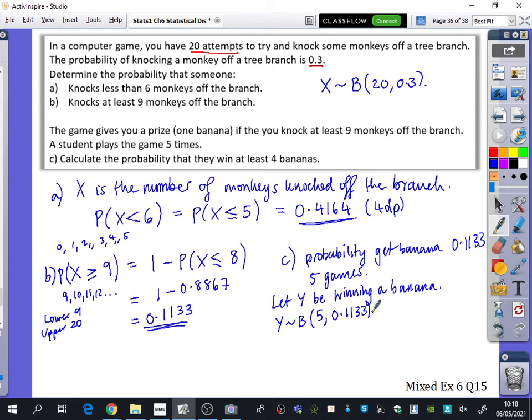So this is a binomial within a binomial question. So now we want to find out the probability that they win at least four. Sorry, did you have a question? I said you could win at two in one binomial. No, you can't. What did you say? No, because it says here, it says the game gives you a prize of one banana if you knock at least nine monkeys off the branch. And you have 20 attempts within one game.